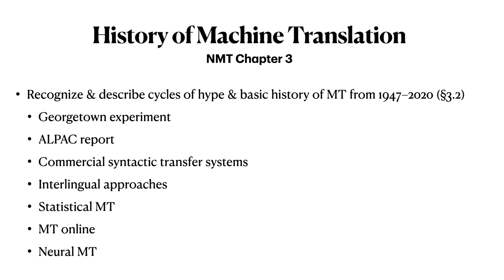Continuing with Chapter 3 of Neural Machine Translation, you should recognize and be able to describe the cycles of hype as well as the basic history of machine translation from 1949 through 2020. This includes the Georgetown Experiment, the ALPAC Report, commercial syntactic transfer systems, interlingual approaches, statistical machine translation, machine translation online, and neural machine translation.